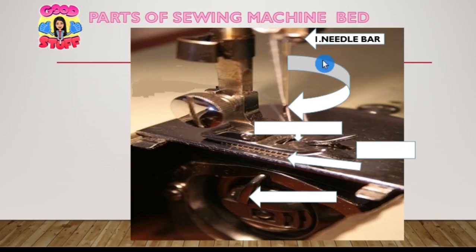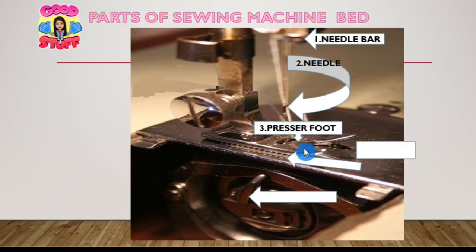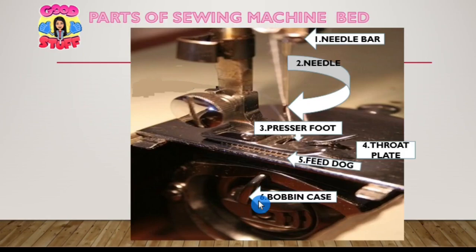The needle bar, this one is the needle, and then presser foot, throat plate, the feed dog under the presser foot, and the bobbin case.